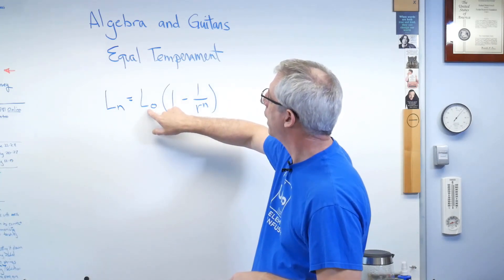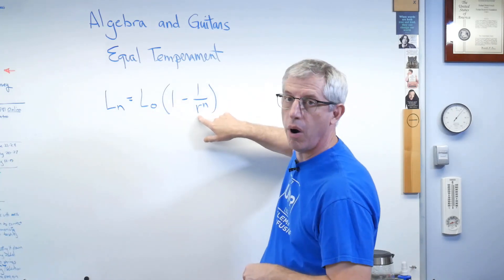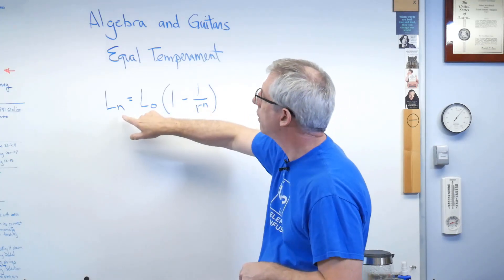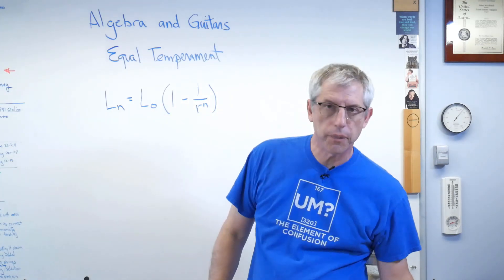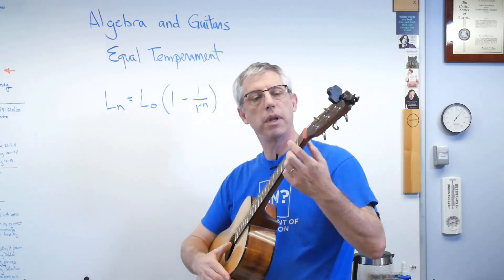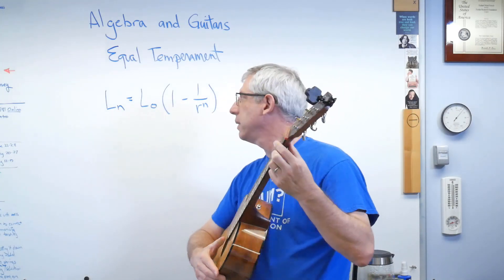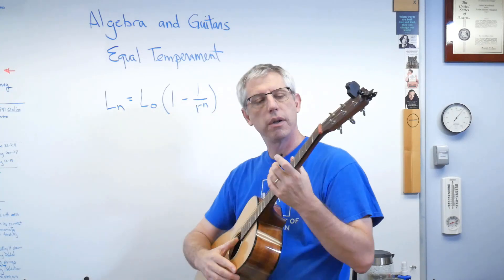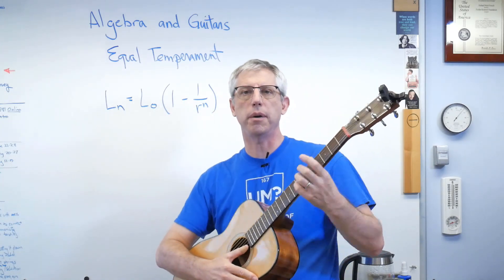And, I'm going to write it out this way. This expression right here tells me the location of all the frets. There's the scale length. There's that number R we just figured out. And N, there and there, that's the fret number. So, the distance from the nut to fret 1 is when R equals 1. When R equals 2, that's the distance from the nut to there.